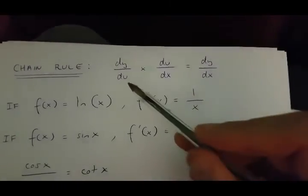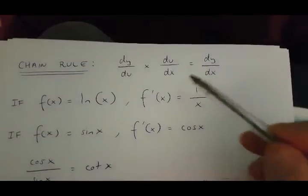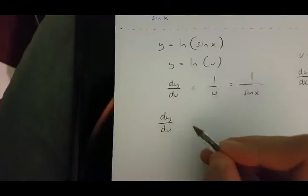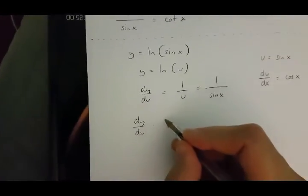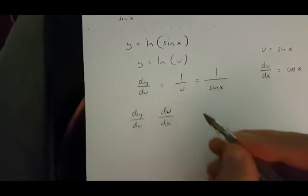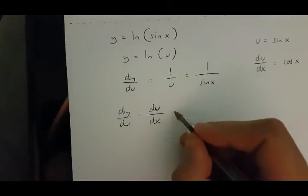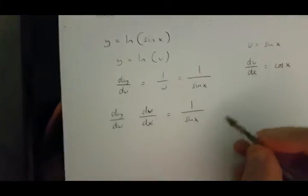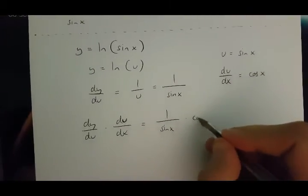So, let's multiply these two together. dy over du times du over dx is going to be equal to 1 over sin x times cos x.